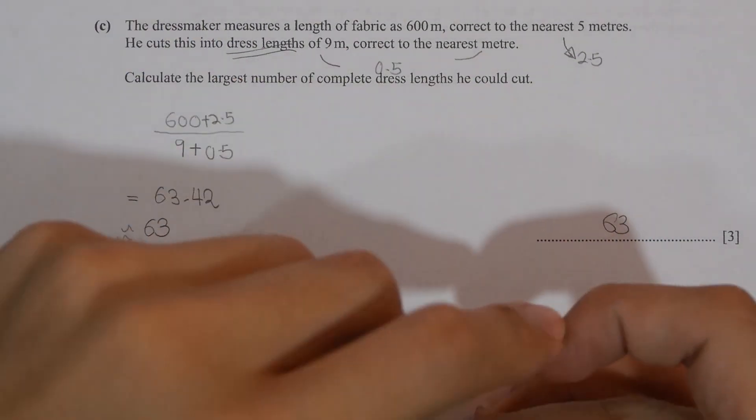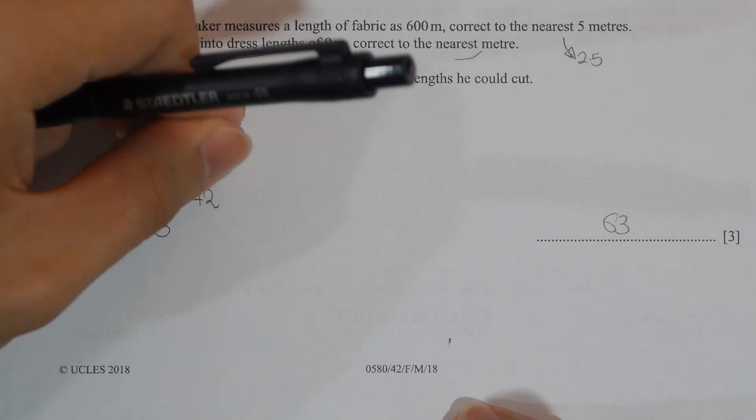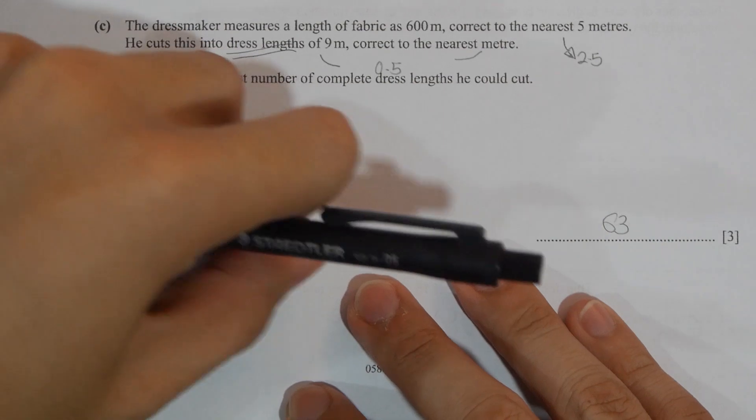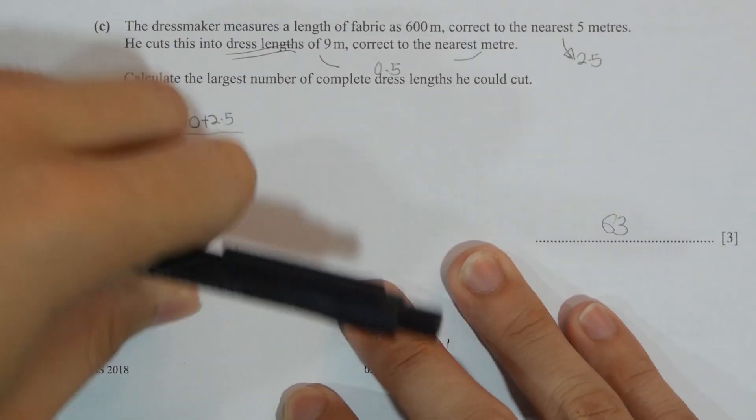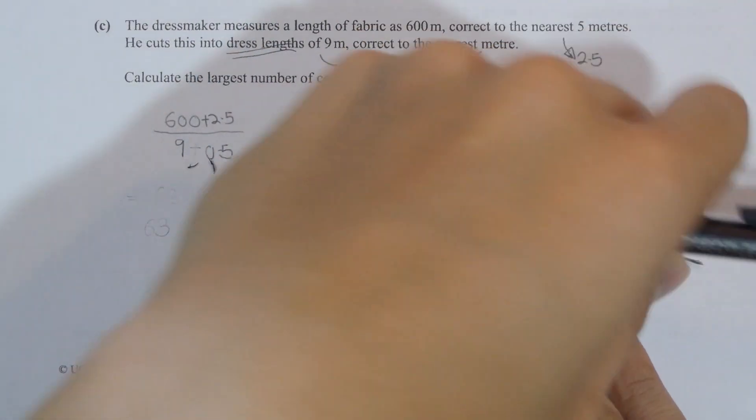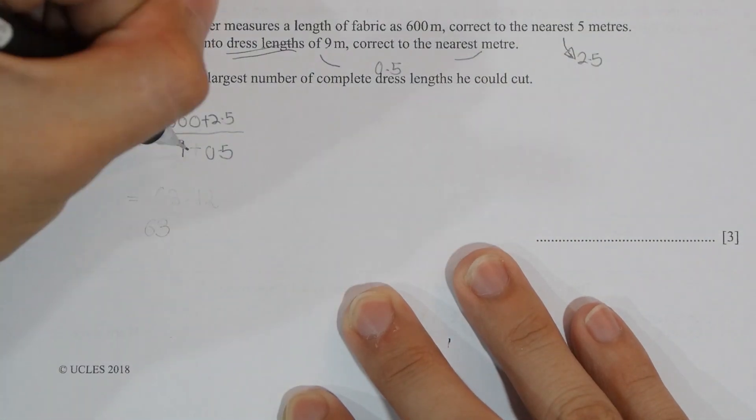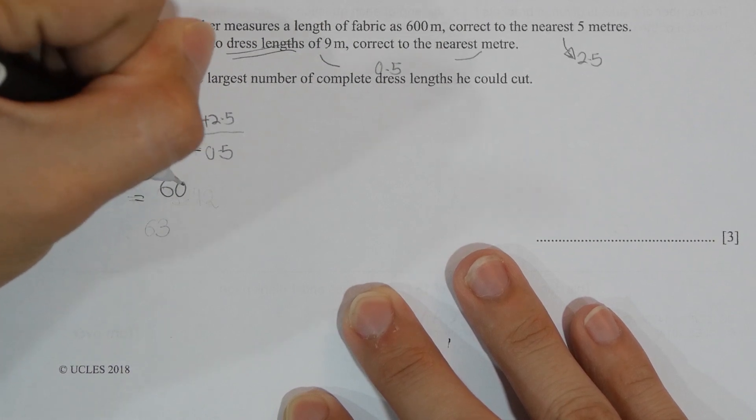For the fabric, you're required to add 2.5, which is half of what it was rounded up to. So 5, half of it is 2.5. For the dress length, you're required to round it down instead. So you minus 0.5 instead of adding 0.5 like I did.